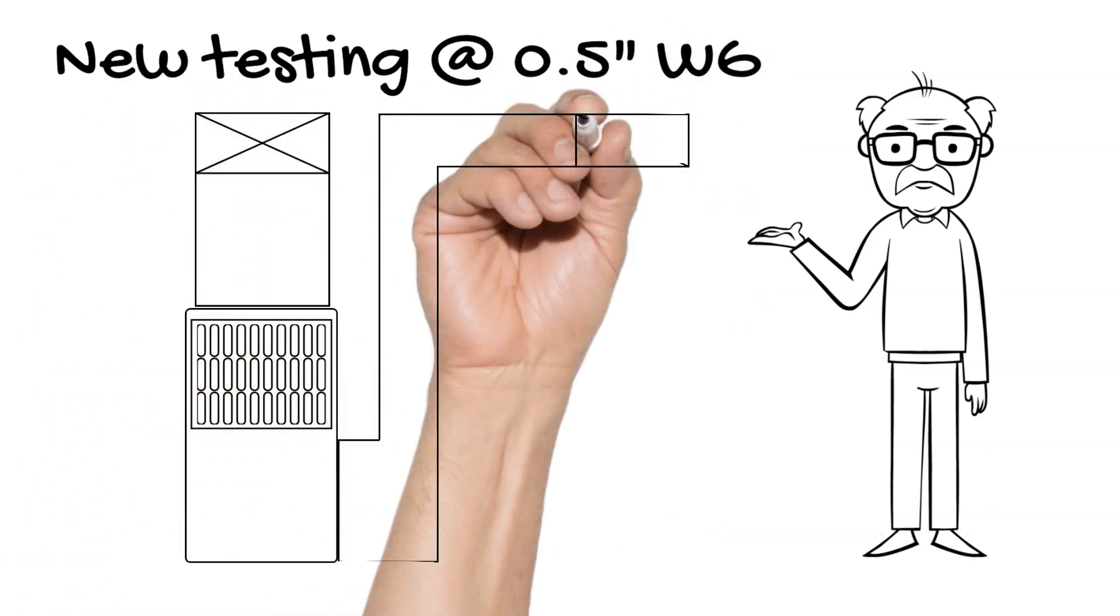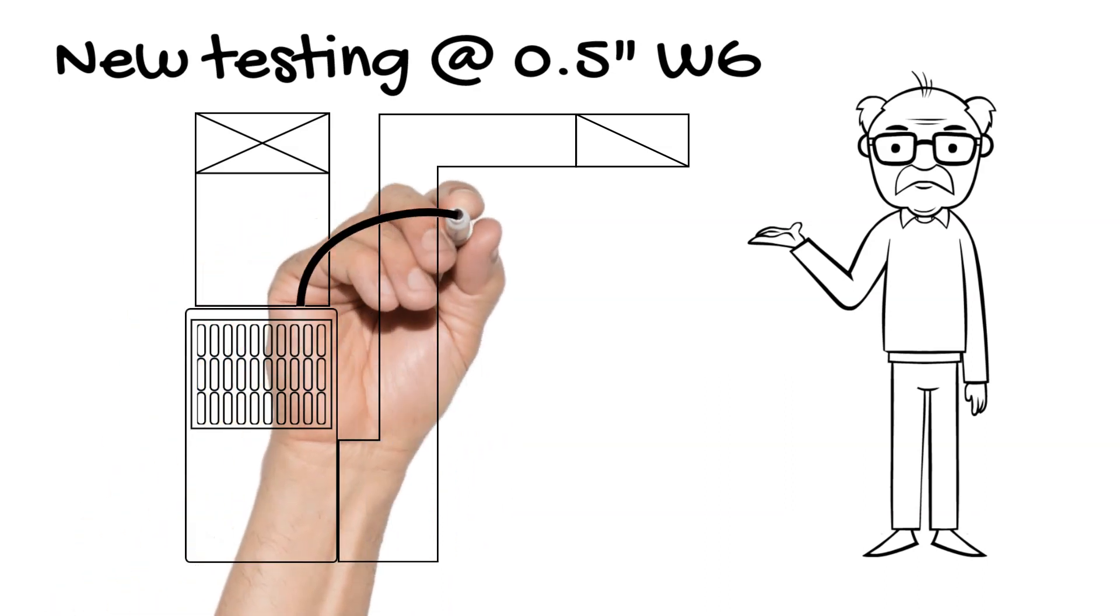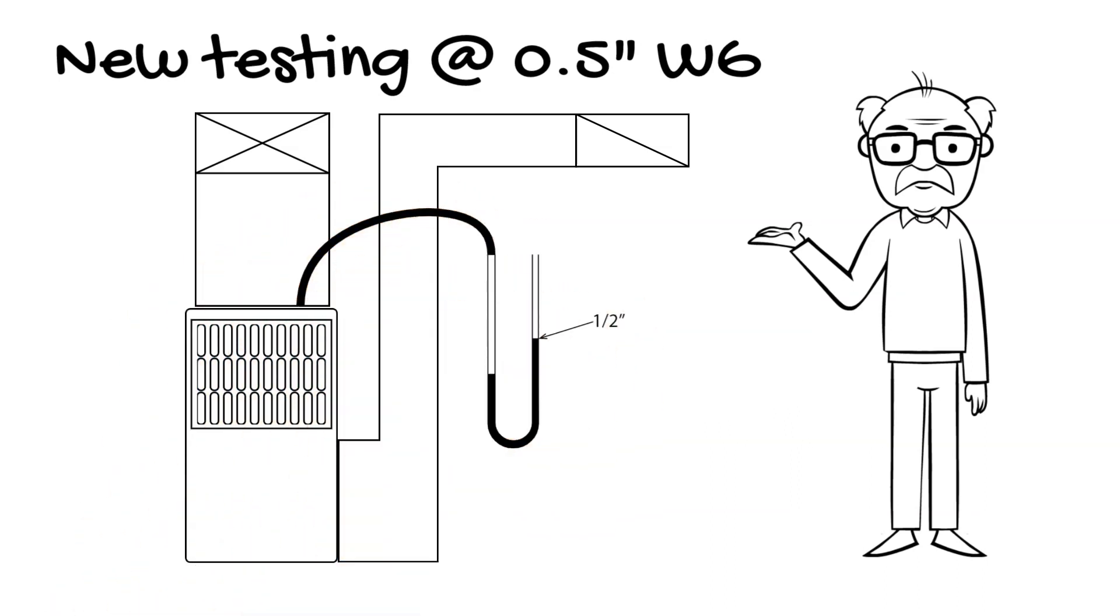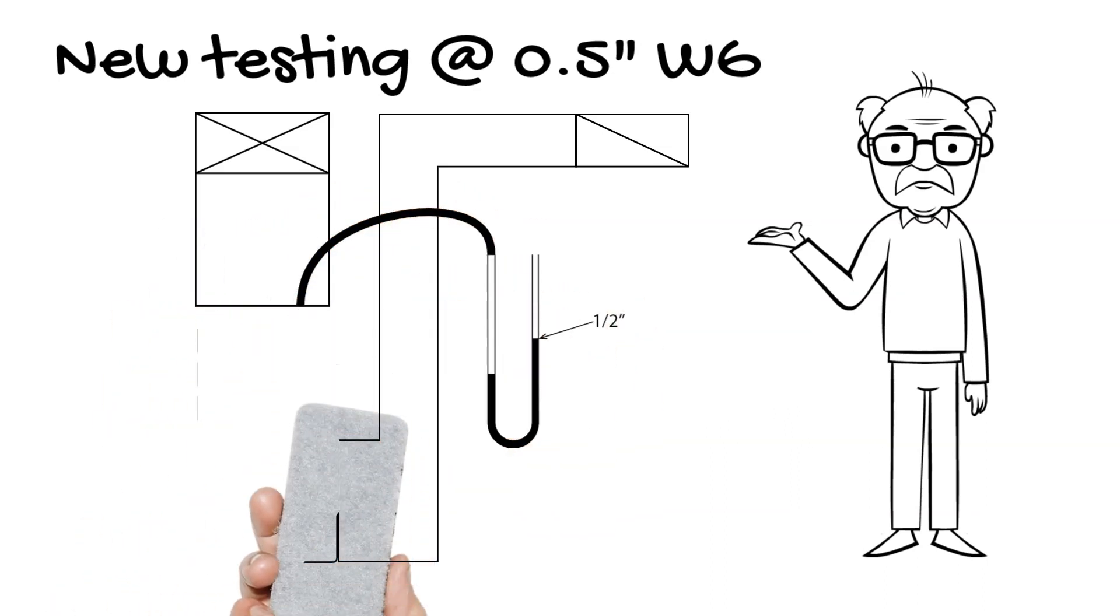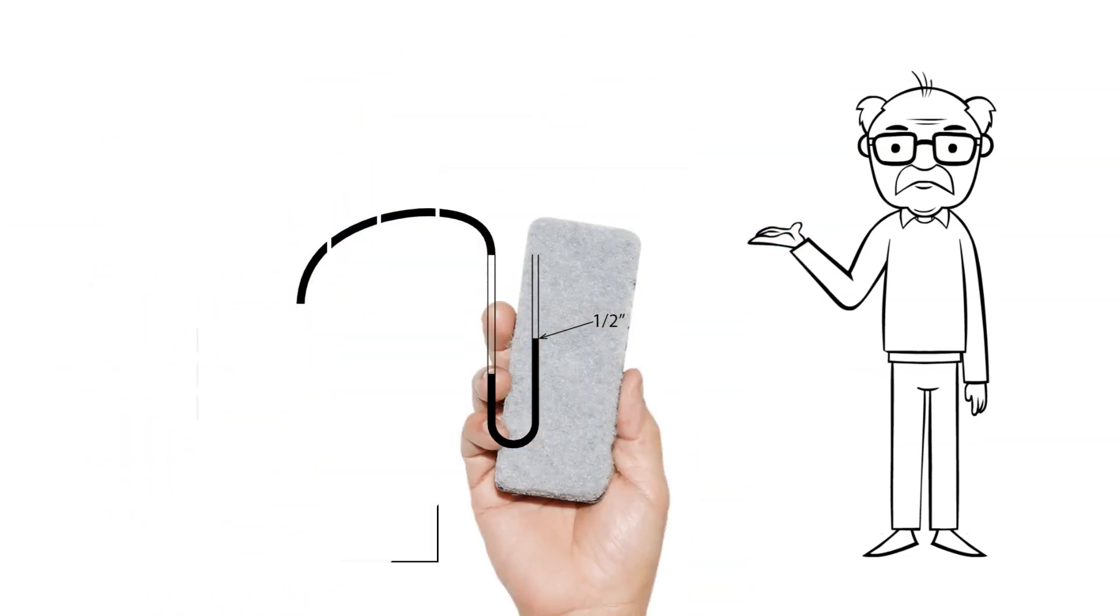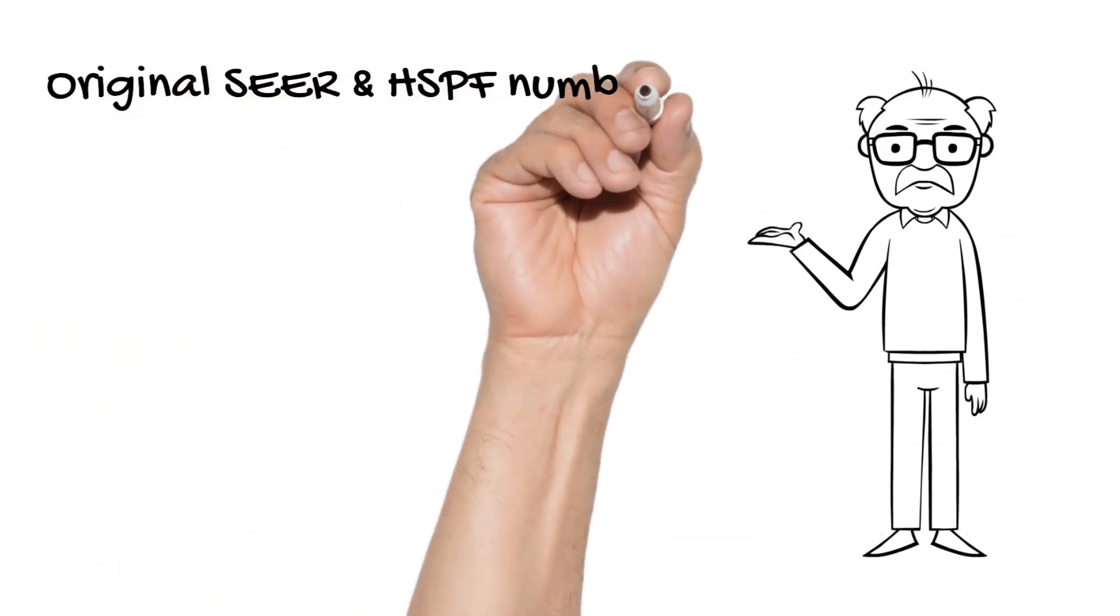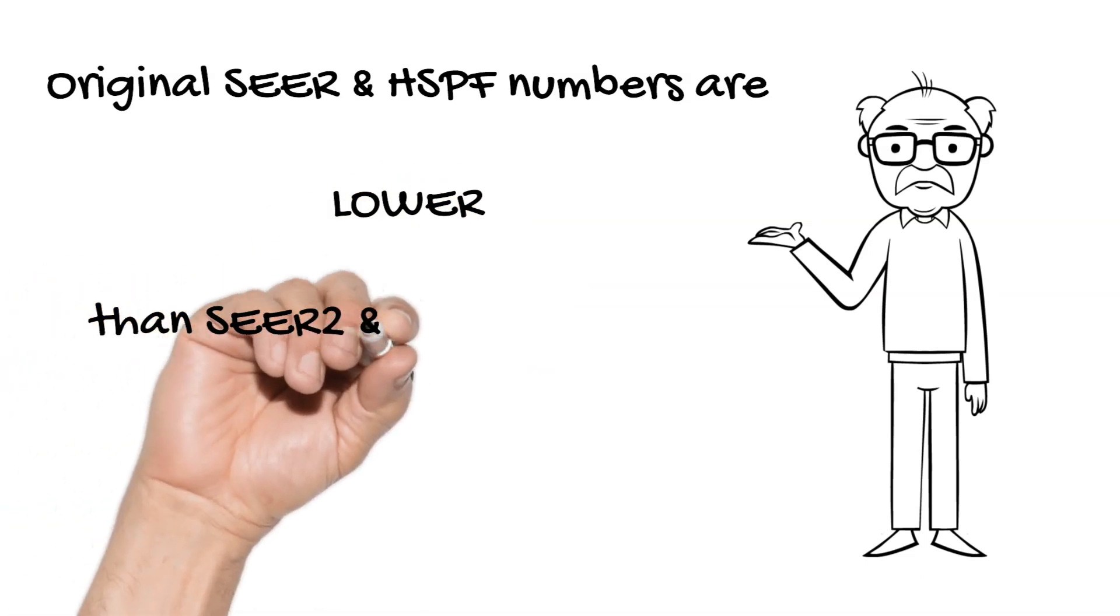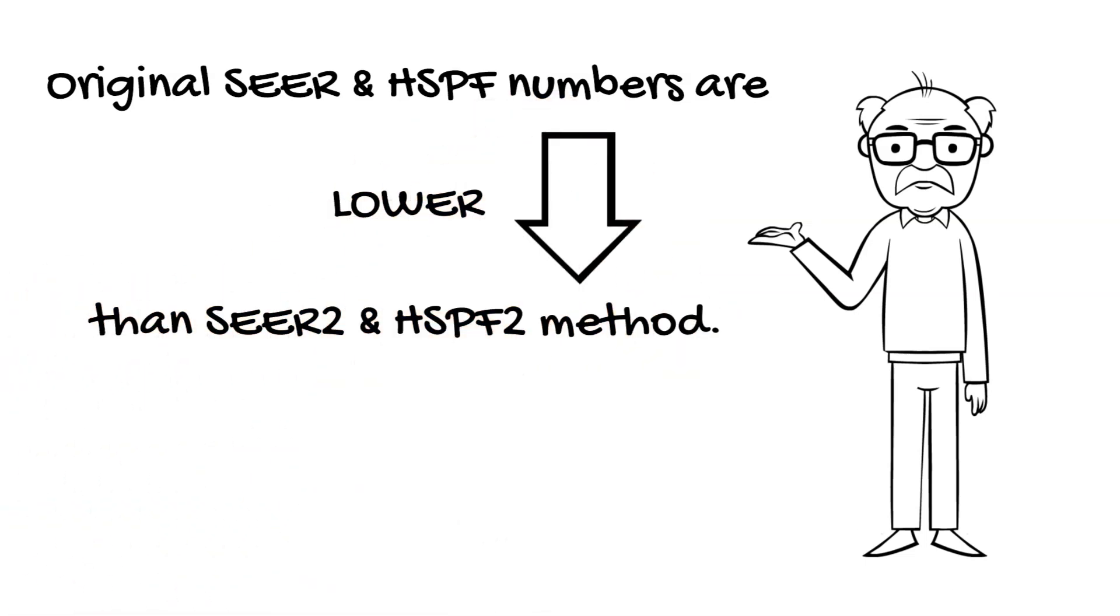The new testing procedure is performed at 0.5 inches water column. Thus, the results are in line with the more typical home conditions. That also means the old SEER or HSPF numbers would be calculated lower as SEER2 or HSPF2 values.